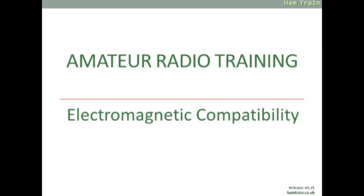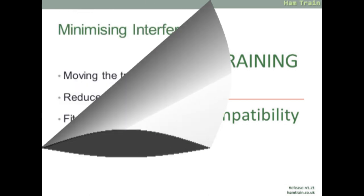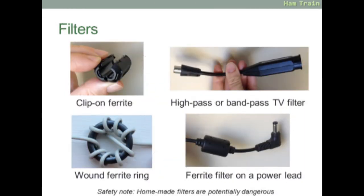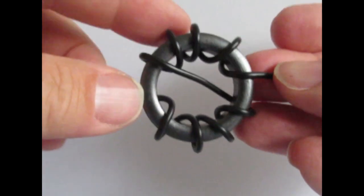A look now at EMC, electromagnetic compatibility. This is all about minimizing interference. Typical ways of reducing interference are to move the transmitting aerial away from the thing you're causing interference to, to reduce the power, to fit filters, and of course, it's good practice to have a good RF earth. On the screen now, you can see pictures of four different types of filters: the clip-on ferrite that goes around your coax cable, filters that can be plugged into a TV set to reduce interference, you can also wind your wires around a ferrite ring, and on some mains plugs you'll have a ferrite filter.